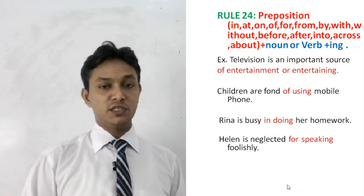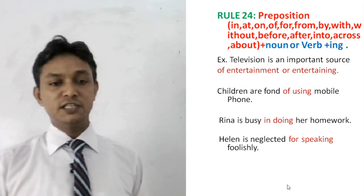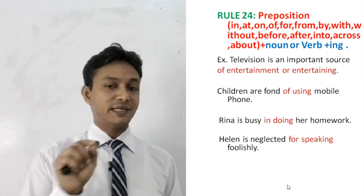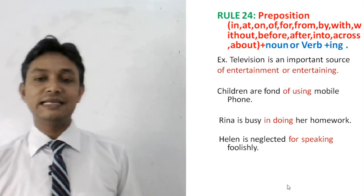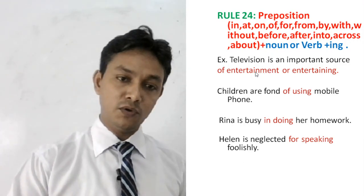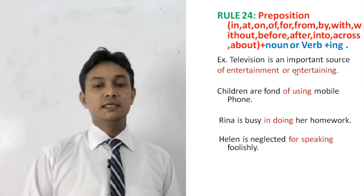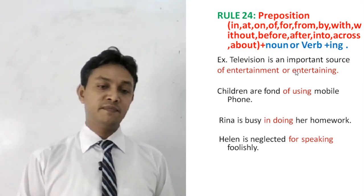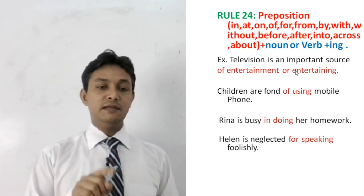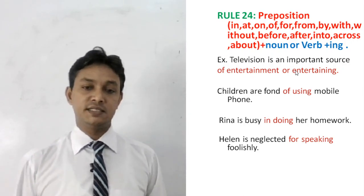Rule number 24 — Preposition: After all prepositions except 'to', we use -ing with the base form, or we can use the noun form. Examples: 'Television is an important source of entertainment' (noun form) or 'entertaining' (-ing form). 'Children are fond of using mobile phone' — -ing added after the preposition 'of'. 'Rina is busy in doing her homework' — in plus doing. 'Helen is neglected for speaking foolishly' — for plus speaking.